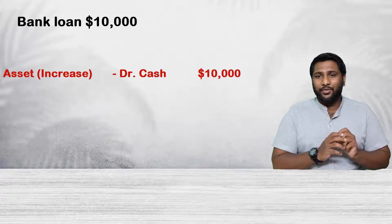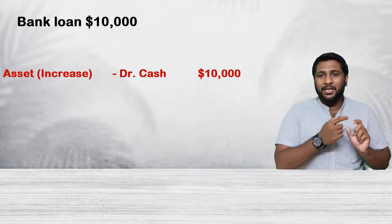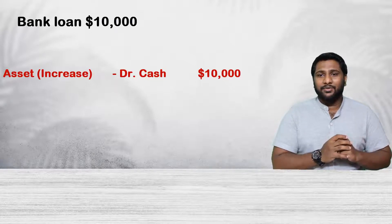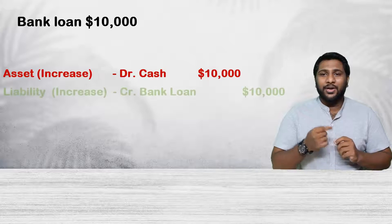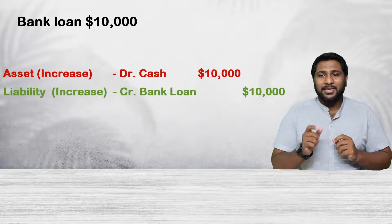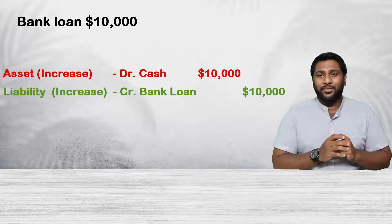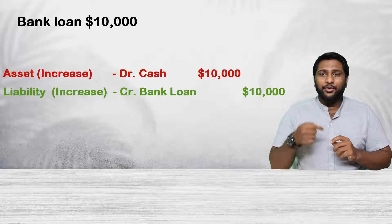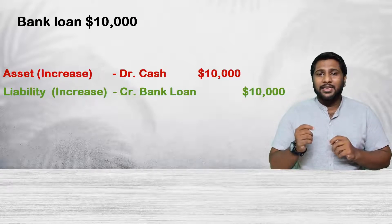Let me take an example. The business took a bank loan of 10,000 US dollars. If the business takes a bank loan, what will happen? The business is getting an asset — specifically cash, since the business took a loan. Asset increases, and assets are on the left side of the equation, so it should be a debit entry recorded in the debit side of the T-account. On the other side, liability is increasing because the business is taking a loan. Liabilities are on the right side of the equation, so the element increasing on the right side should be a credit record — the loan is recorded as a credit in the right side of the T-account.